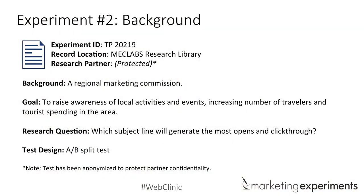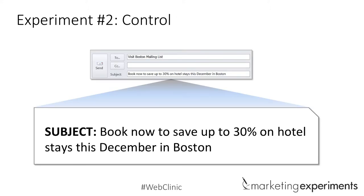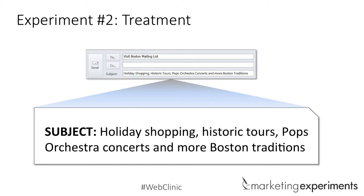We didn't just stop there — we ran another experiment. There are a couple of reasons the treatment may have outperformed: we used specificity, naming specific foods, and made it more appetizing. But what about an incentive? This second subject line said: 'Book now to save up to 30% on hotel stays in December in Boston.' That's a pretty significant saving and a solid subject line, but we wanted to follow the same approach and see what difference it could make.